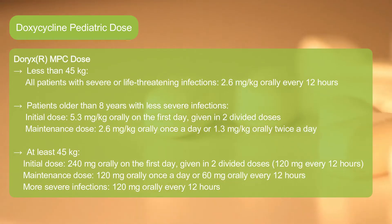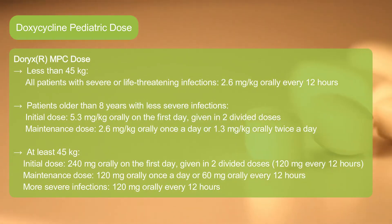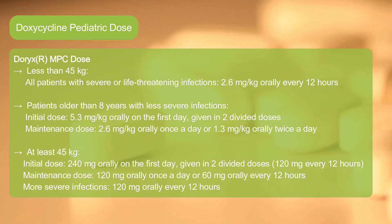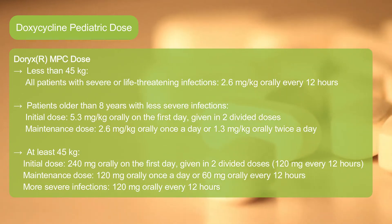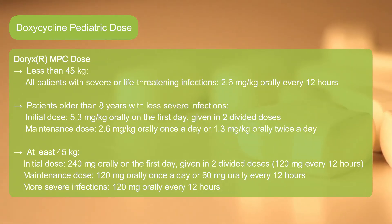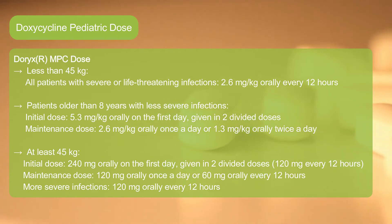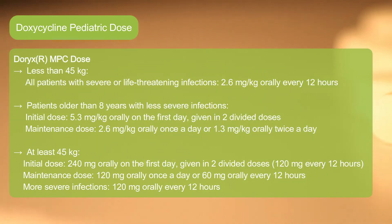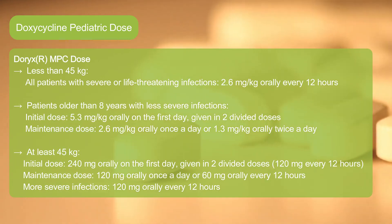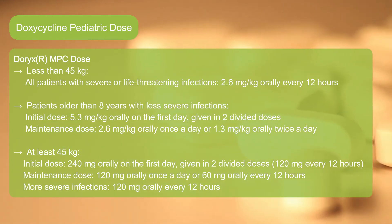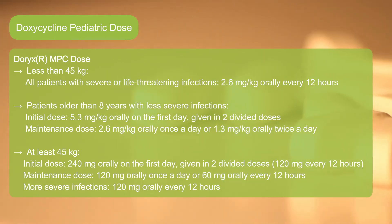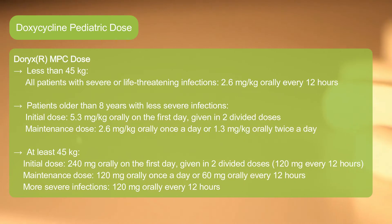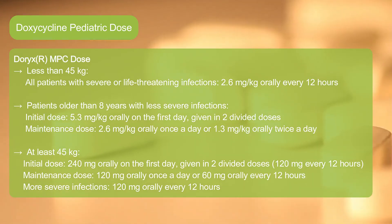Dorix MPC pediatric dose, less than 45 kg: All patients with severe or life-threatening infections: 2.6 mg per kg orally every 12 hours. Patients older than 8 years with less severe infections — initial dose: 5.3 mg per kg orally on the first day, given in 2 divided doses. Maintenance dose: 2.6 mg per kg orally once a day, or 1.3 mg per kg orally twice a day.